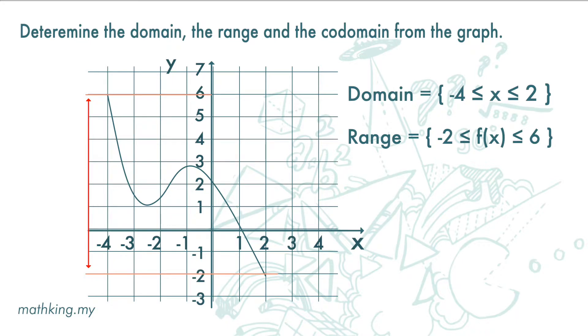As for codomain, since we do not have additional data, we just set codomain as equal to the range.